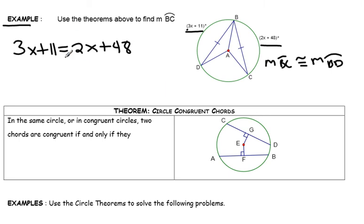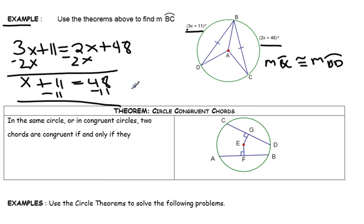I'm going to subtract 2X from both sides, and I get X plus 11 equals 48. And then I would subtract 11 from both sides. So I get that X is 37.